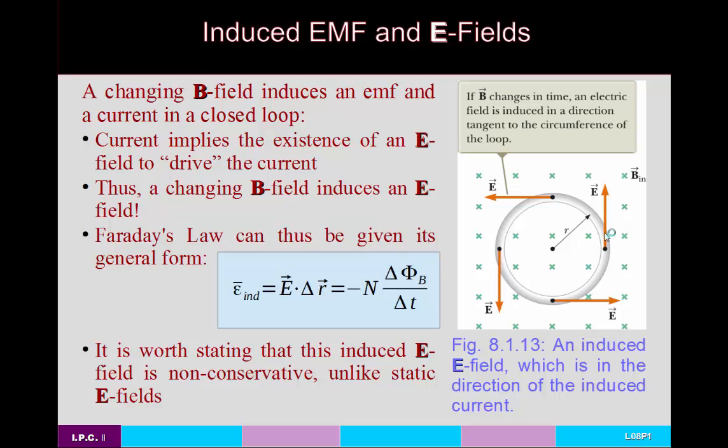It's also worth noting that the induced electric field is not conservative, unlike a static electric field. Because the field is changing in time, as you make your way around the entire loop you encounter a different E field than what you started with. Everywhere in the loop your charge would be accelerated by this E field, and if the field were somehow held constant, it still would not be uniform — so the charge would just be accelerated more and more as it goes around the loop.